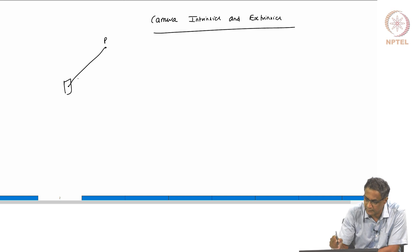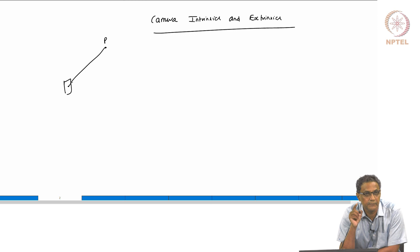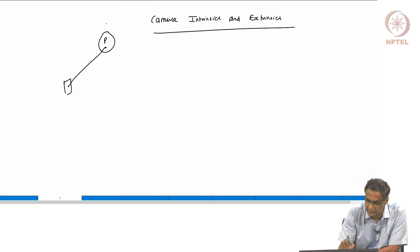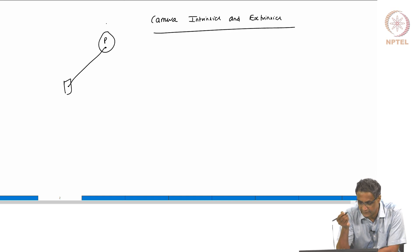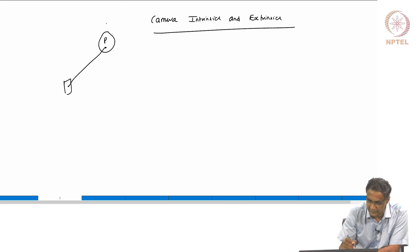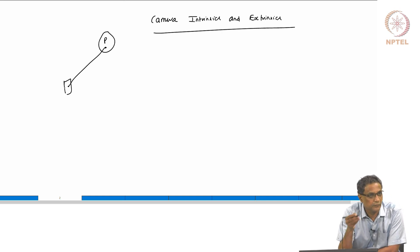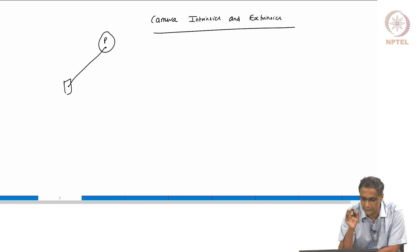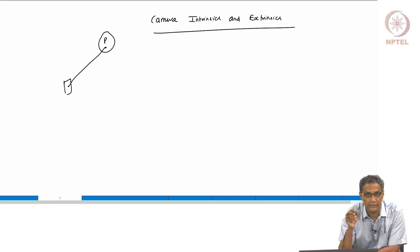This involves both intrinsics and extrinsics. Where a point gets mapped in an image plane depends not only on where the point is, but also on the intrinsics of the camera — meaning what the focal length of the camera is. There are a few other things also which are actually relevant. You may think that focal length is the only thing, but there are a few additional parameters that you may require.